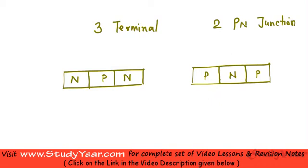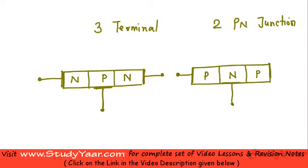Your transistor basically has three terminals. You have an ohmic contact with a lead coming out here, an ohmic contact over here, and an ohmic contact here as well. These are your three terminals for your transistor. The same applies for a PNP transistor — you have three contacts through which you have your leads serving as three terminals.